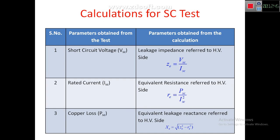Using three meters we obtain VSC, ISC, and PSC from the test. From these we calculate: the leakage impedance referred to the HV side ZE = VSC / ISC; the equivalent resistance referred to the HV side RE = PSC / ISC² (from the copper loss formula PSC = ISC² × RE); and the leakage reactance referred to the HV side XE = √(ZE² − RE²).